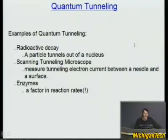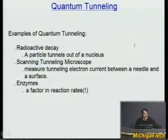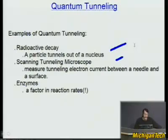For instance, radioactive decay happens all the time and helps us date things — carbon-14 dating, for example. In radioactive decay, a particle tunnels out of a nucleus, which is a common phenomenon that relies on quantum tunneling. There are also scanning tunneling microscopes, where you put a needle down and there will be a tunneling electron current between the needle and a surface. The amount of current can help you see very, very small things, down to the atomic scale.